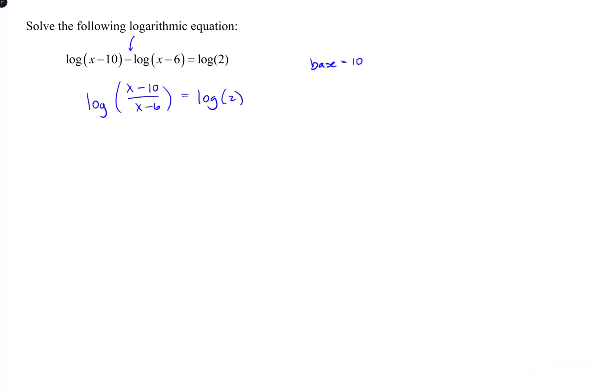Now, since I have two logarithms of the same base, effectively what I can do is just drop the logarithms. Now, there's more going on. In fact, what you're actually doing is you're raising both sides as an exponent whose base is equal to the base of the logarithm.